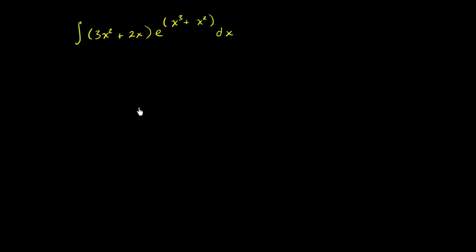So how would we go about solving this? When you look at it, it seems like a really complicated integral. We have this polynomial right over here being multiplied by this exponential expression. And over here in the exponent, we essentially have another polynomial. It seems kind of crazy.